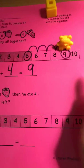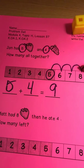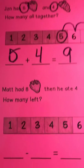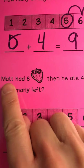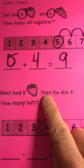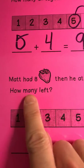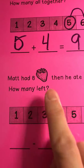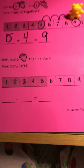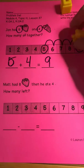So you choose what you feel comfortable with boys and girls to act out your math story. I'm going to read you the next problem now. Matt had eight strawberries then he ate four. How many left? Please act that out on your number path and then you're going to write your subtraction sentence.